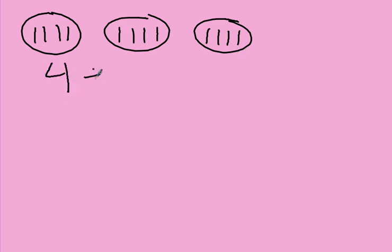I'm going to start with making an addition sentence. I have four plus four plus four. See that? I have four in each group. Each group has the same amount. When we're dealing with multiplication, or even when we're dealing with division later on, your groups are going to have the same amount, and we're adding it together. Four plus four plus four.